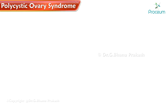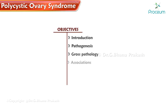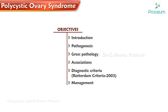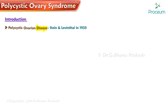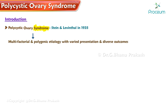Polycystic Ovary Syndrome, previously known as Polycystic Ovarian Disease, was first described by Stein and Leventhal in 1935. It is now called Polycystic Ovary Syndrome because it has a multifactorial and polygenic etiology with a varied presentation and diverse outcomes.